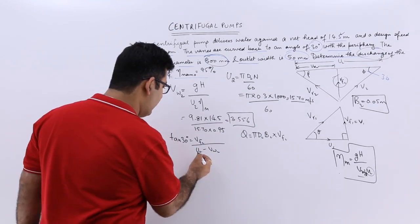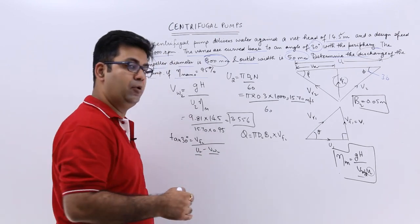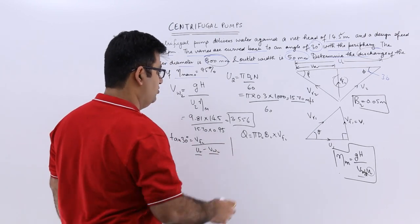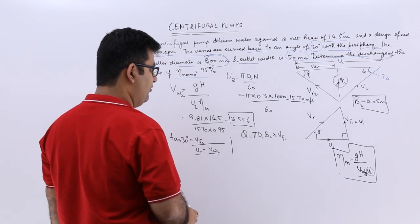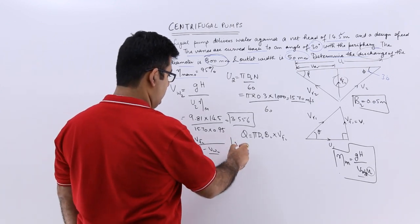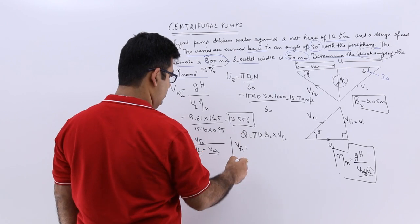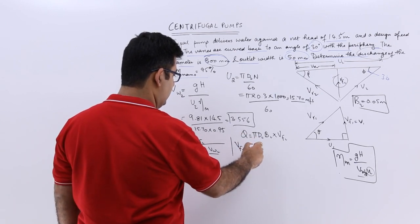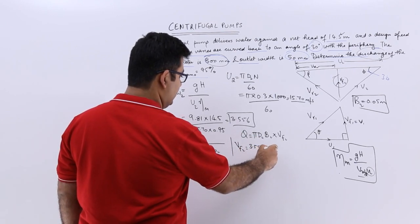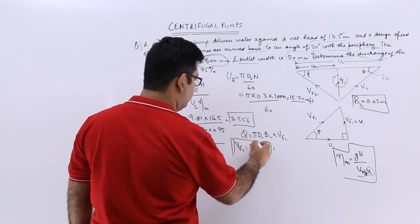So I know the value for U2. I know the value for Vw2. Now from here I can get the value for Vf2. So Vf2 comes out to be 6.956 meters per second.